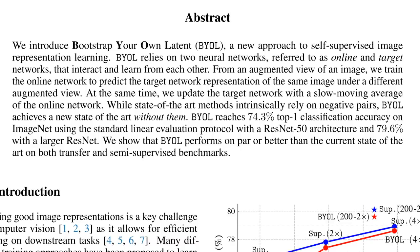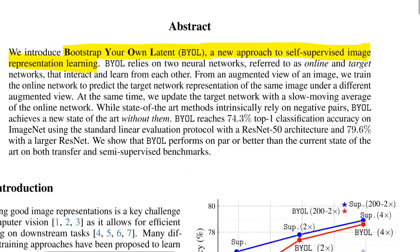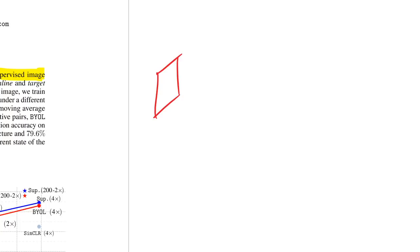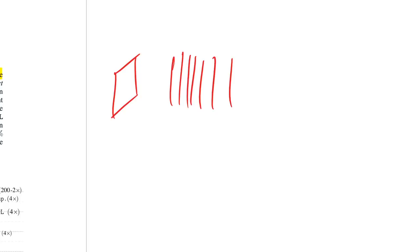They say: we introduce Bootstrap Your Own Latent, or BYOL, a new approach to self-supervised image representation learning. Image representation learning is the task of taking an image, feeding it through a function — usually a neural network, standardized to something like a ResNet-50 — to give you a good representation of the image, a vector h.